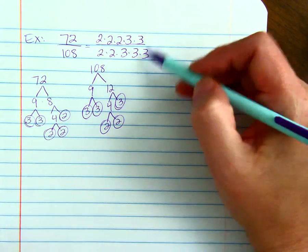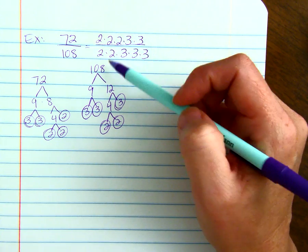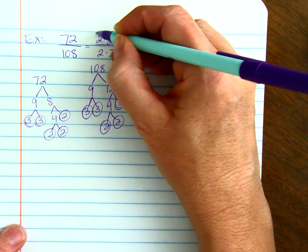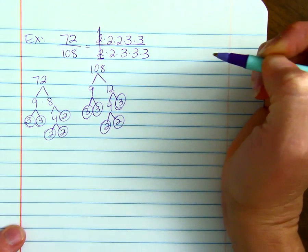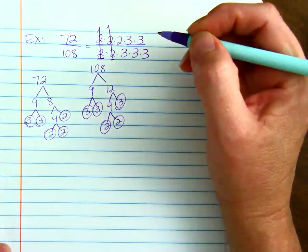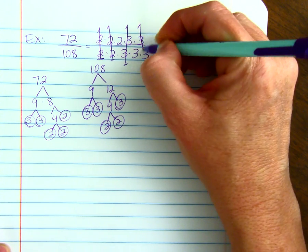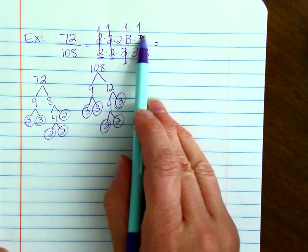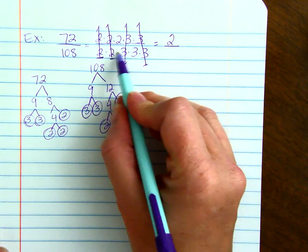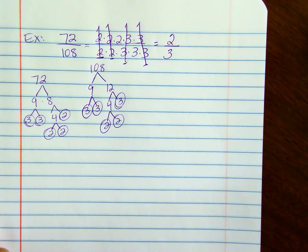If you have these written as prime numbers, you can cancel the primes that are the same in the numerator and the denominator. 2 divided by 2 equals 1. And then these 2's cancel to be a 1, these 3's could be a 1, and these 3's could be a 1. Then if we multiply what's left, we have 1 times 1 times 2 times 1 times 1. We have 2 in the numerator and 3 in the denominator. So it reduces down to 2 thirds.